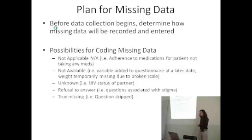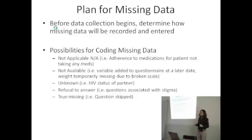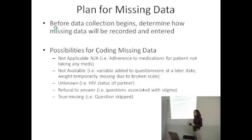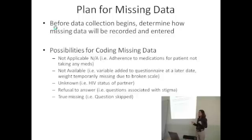'Unknown' is kind of interesting — it's not really missing data, because it's known to be unknown. For example, if you ask somebody about the HIV status of their partner, they may not be able to tell you whether they're positive or negative. So unknown is a valid response; it's actually the response you get from the patient. It's a good idea to think about whether or not you need an 'unknown' option when you're designing data collection forms.